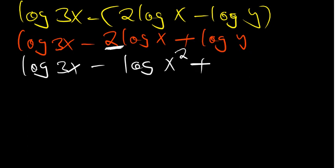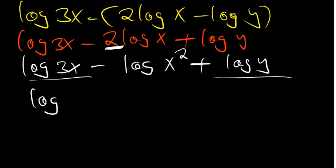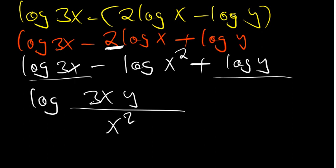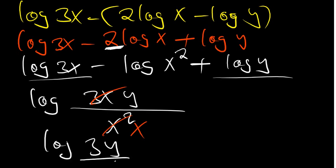Now combine: the positive terms 3x and y multiply on top; the negative term x² goes on the bottom, giving log base 10 of (3xy / x²). We can cancel one x from numerator and denominator, so the final answer is log(3y / x).